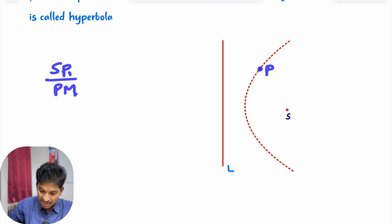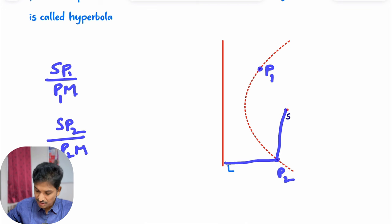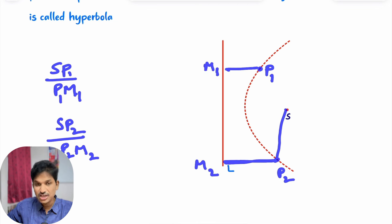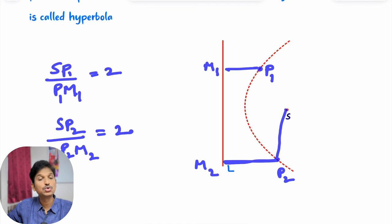Suppose SP₁ divided by P₁M, and SP₂ divided by P₂M — where P₁ and P₂ are different points. P₁M and P₂M are the respective distances to the fixed line. The ratio of these distances is constant. Suppose this ratio is 2 — this ratio is also 2. That constant ratio must be greater than 1.